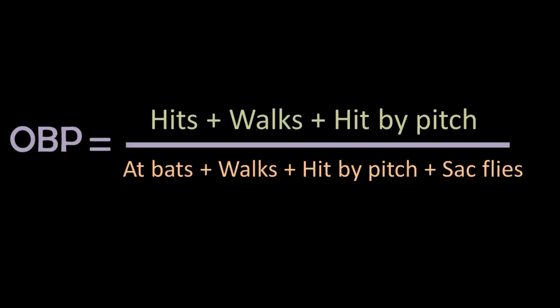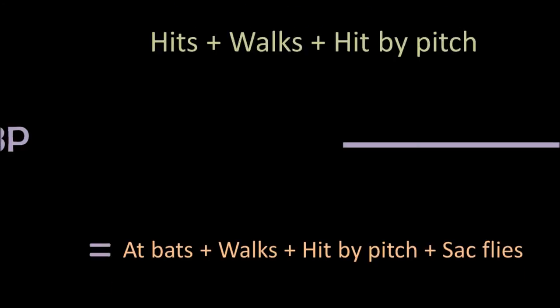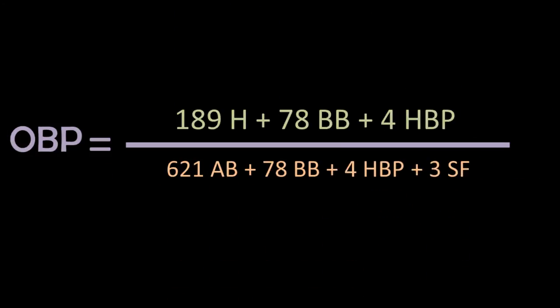And just like the batting average, we'll stick to Mr. Mays in the 1962 season, in which he had 621 at bats, 189 hits, 78 walks, and was hit by 4 pitches. And he had 3 sacrifice flies.